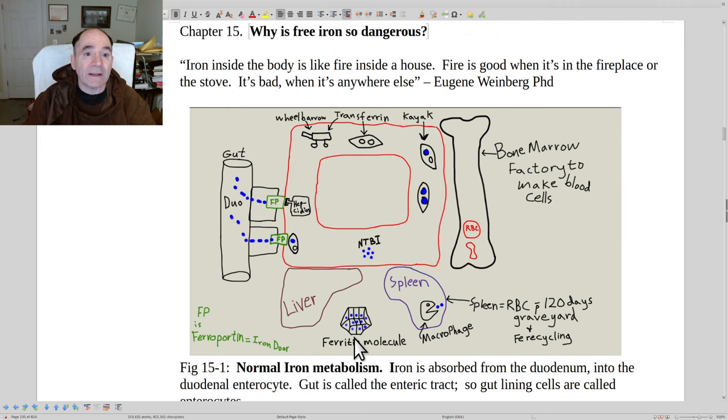Iron gets recycled through the spleen, because red blood cells typically live about three months, 120 days. Then the spleen is like the graveyard for red blood cells, and the macrophages, reticuloendothelial cells, they ingest the iron and it gets cycled back to where it should be.